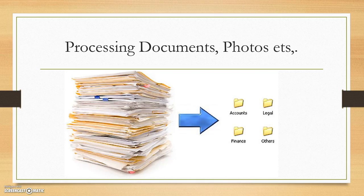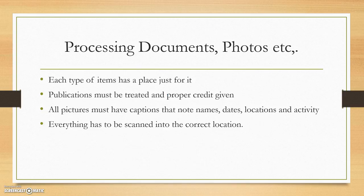The next step is how to process documents, photos, and so on. All documents and photos have to be processed in a certain way. The way you set up your files in the computer dictates where each item goes — whether it's a picture, a document, or a publication. Each type of item has a designated place. Publications must be given proper credit. All pictures need captions with notes, names, dates, locations, and activities. Everything has to be scanned into the correct locations.